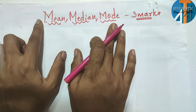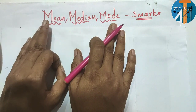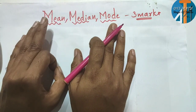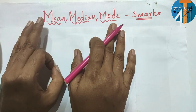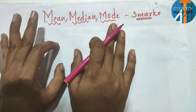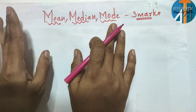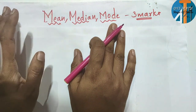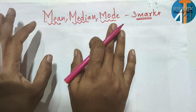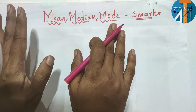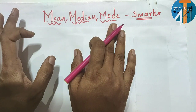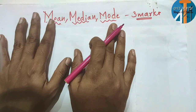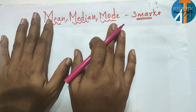Mean can be solved by three methods: direct method, assumed method, and step deviation method. According to me, the simple method — you can directly go for the direct method. It's the best method. Now let us learn one by one.